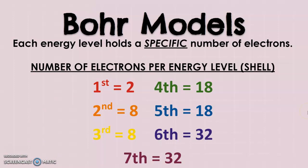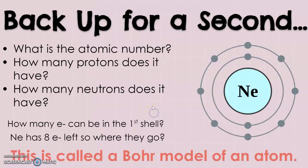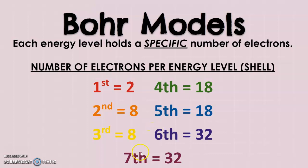Each energy level holds a specific number of electrons. The first energy level can hold two, the second can hold eight, the third can hold eight, the fourth and fifth can hold up to 18, the sixth can hold 32, and the seventh can hold 32. They fill before moving on to the next level. For example, if an element has 16 electrons: two go in the first shell, eight go into the second, and the remaining six fill into the third.